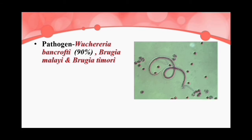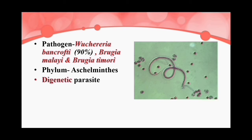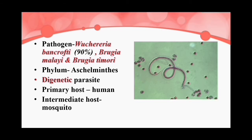These worms come under the phylum Aschelminthes and it is a digenetic parasite. To complete its life cycle it needs two hosts. The primary host is the human, where sexual reproduction takes place. The secondary or intermediate host is the mosquito.